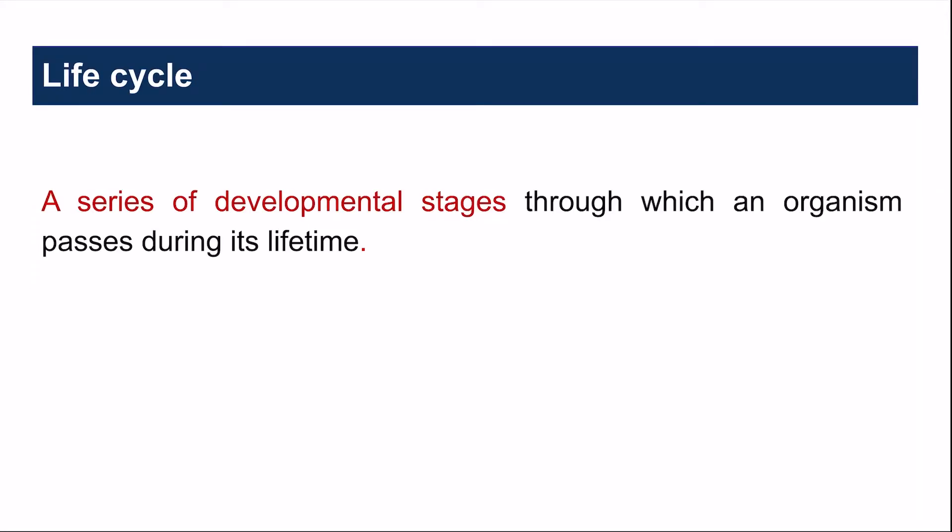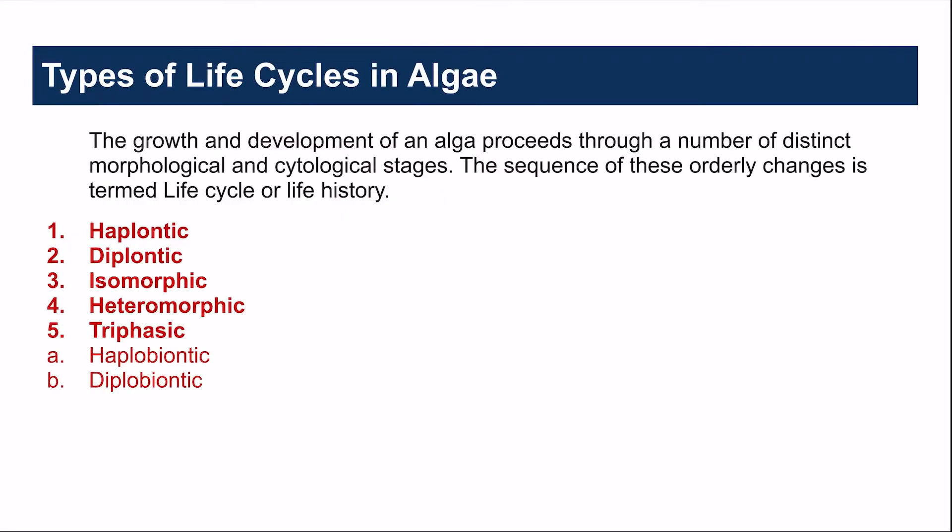When we talk about life cycle, it means every organism goes through a series of developmental stages or changes during its lifetime. So the life cycle constitutes all these developmental stages. In algae, different types of life cycles are present and it shows wide variation.